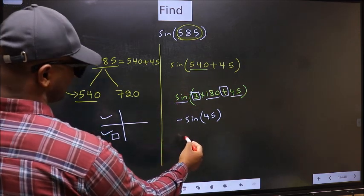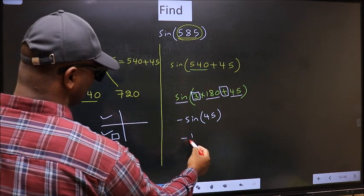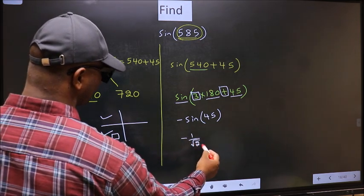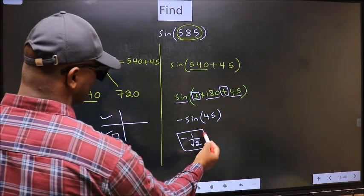So, we should put negative. So, negative sin 45 is 1 by root 2. This is our answer.